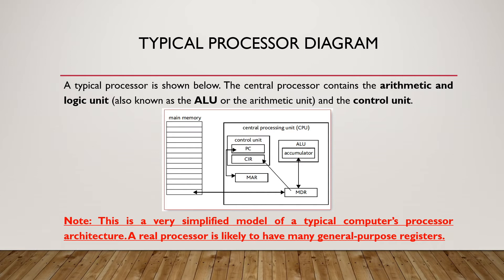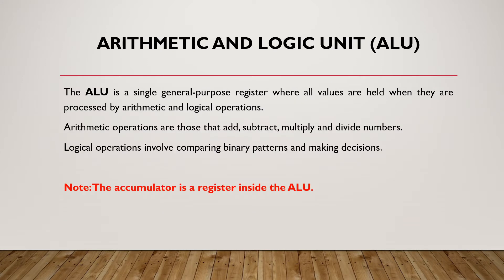A real processor is likely to have many general purpose registers. Here we have a few registers described in the diagram: PC, CIR, MAR, MDR, and Accumulator — but there can be more in a real processor. The ALU, Arithmetic and Logic Unit, is where all values are held when they are processed by arithmetic and logical operations.